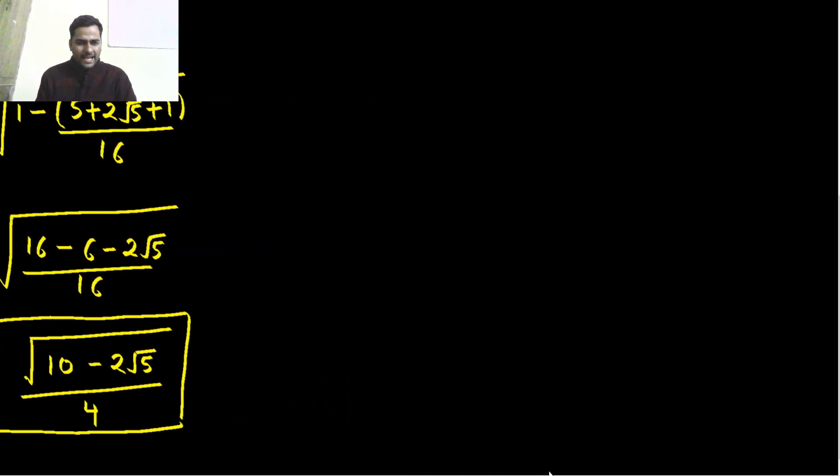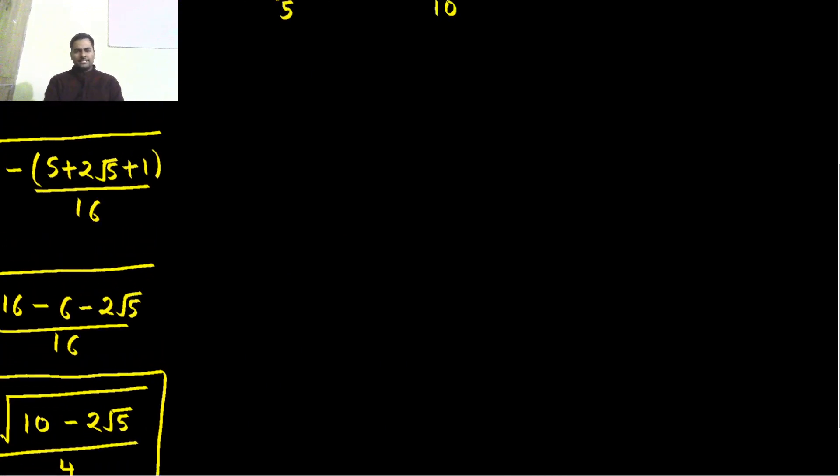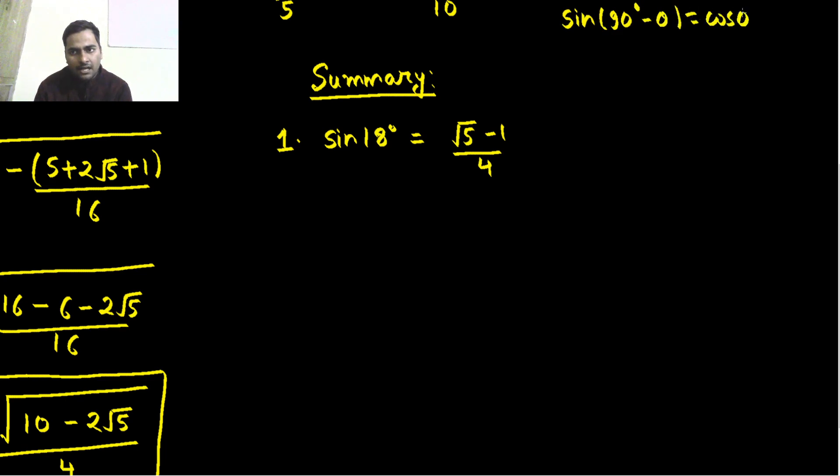At the end of all such discussion, can I summarize things for you? The journey started with the value of sin 18 degrees and I have derived it. It came out to be √5-1 divided by 4. Then we know the complementary angle result that sin(90°-θ) is cos θ and cos(90°-θ) is sin θ. We will use this result. So once we know sin 18 degrees, this would be similar to the value of cos 72 degrees. So cos 72 also, if someone asks you, you will also say √5-1 divided by 4.